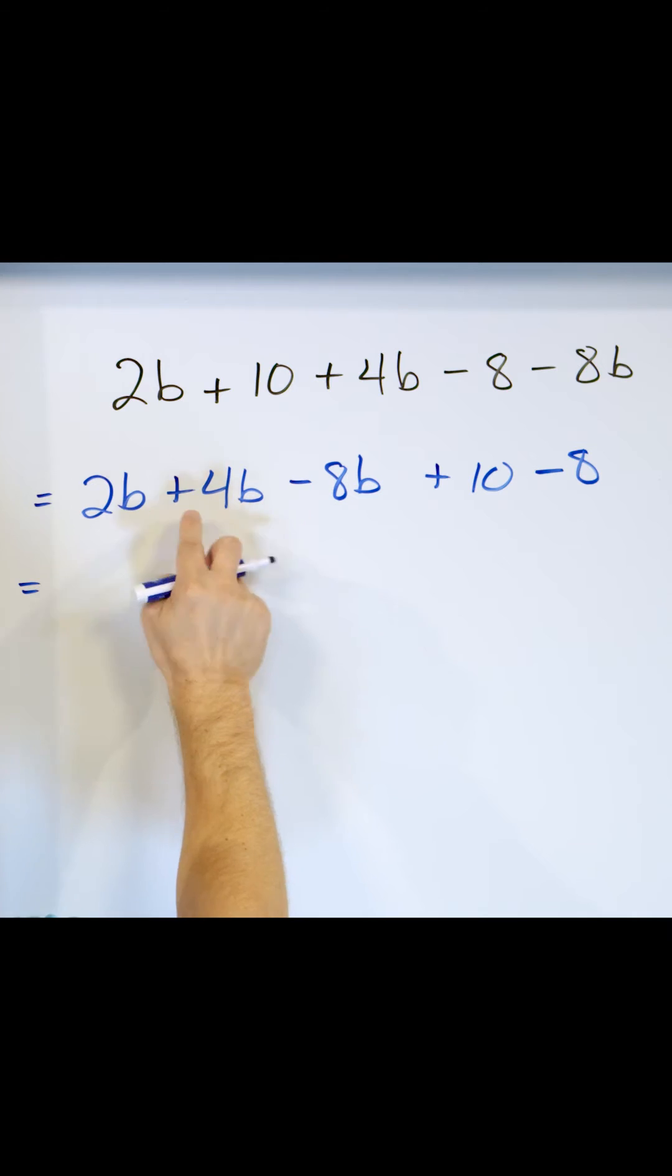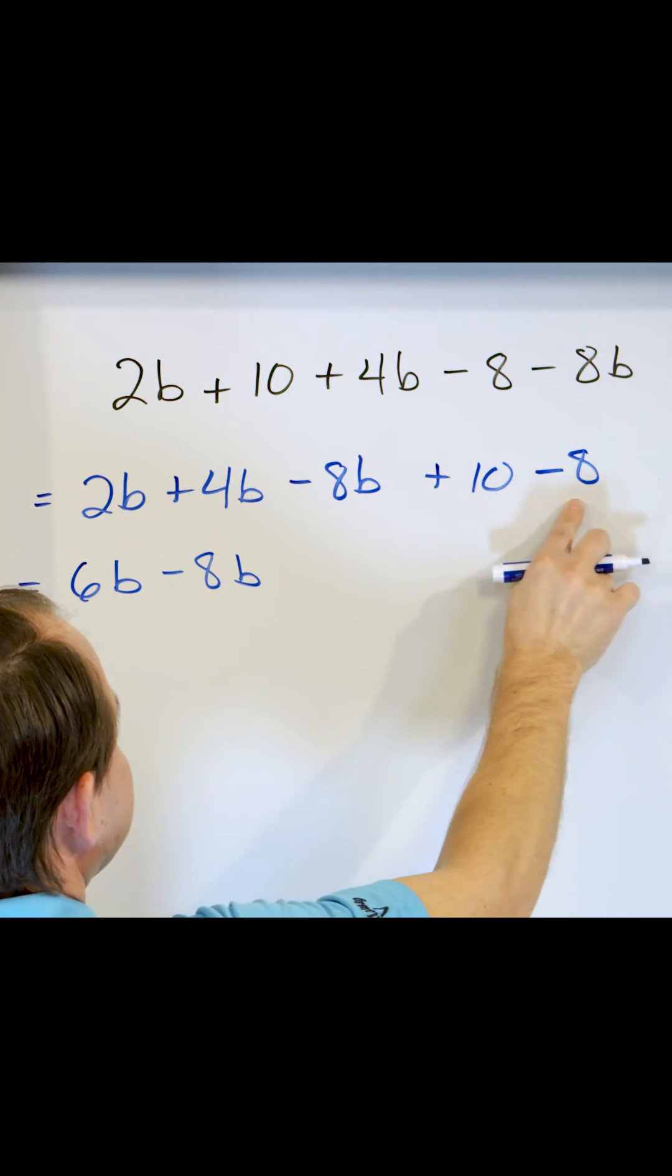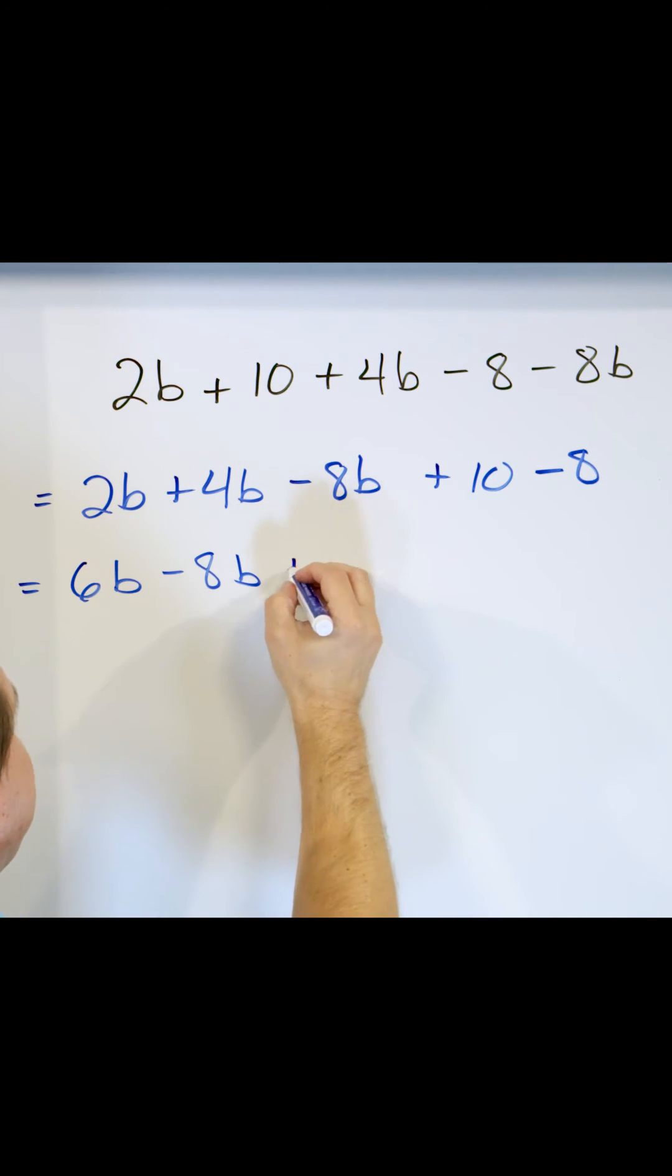We just add the numbers together. What is 2 plus 4? It's 6, so we have 6b. We still have to subtract 8 here. And then we can add these numbers any time we want. 10 minus 8 is going to be positive 2.